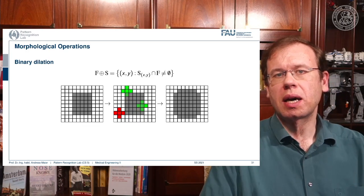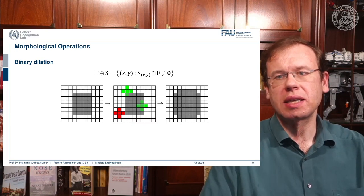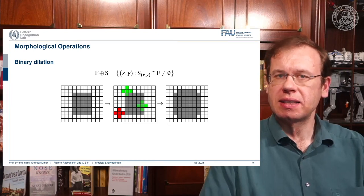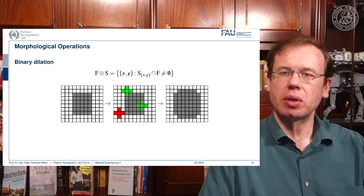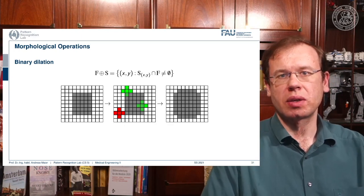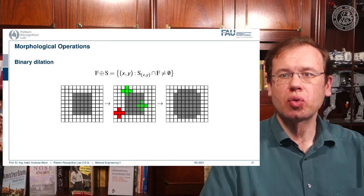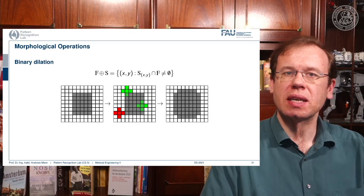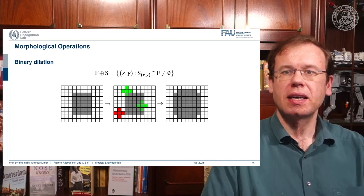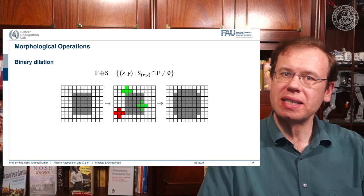On the contrary, you can apply an operation that is called dilation. And dilation now essentially returns true as soon as one element of the structuring element is touching the mask. So here you see the input on the left hand side, and now again three different positions for the structuring element. And only the red one is returning false because it never touches the mask. The two green ones will both return true. And this then results on the output on the right hand side where you see that we are kind of expanding the mask. So this is why it's called dilation, because we're dilating, we're increasing the size of the mask.